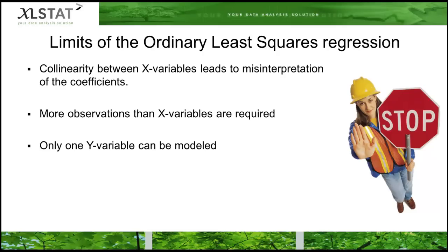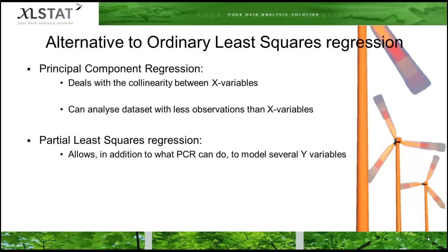To overcome the first two issues—collinearity between the X variables and the necessity of more samples than variables—we can use principal component regression. Partial least squares regression also solves these issues but, in addition, enables you to have several dependent variables.